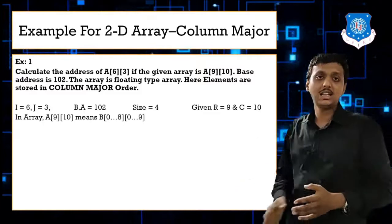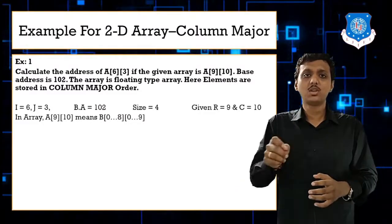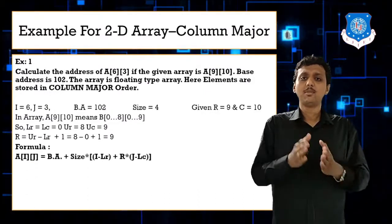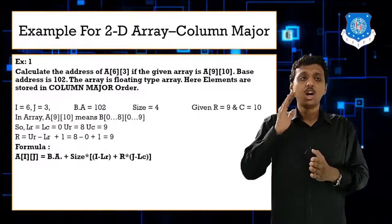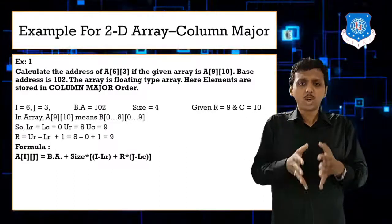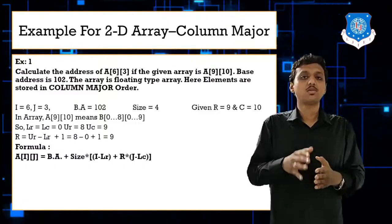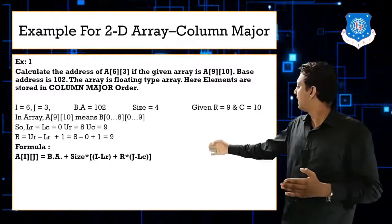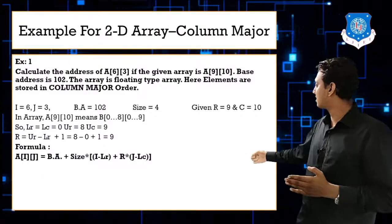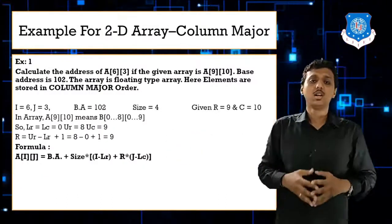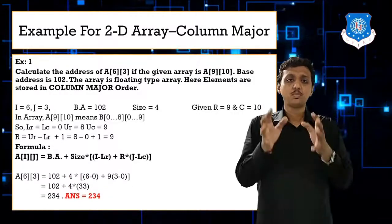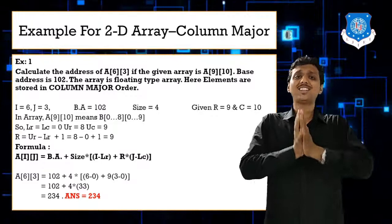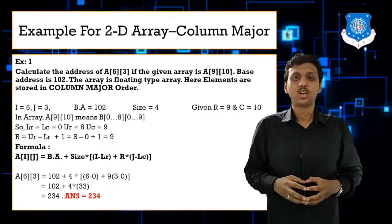Calculate R: R = UR - LR + 1 = 8 - 0 + 1 = 9. LR = 0, LC = 0. Apply the formula: A[i][j] = base address + size × ((i - LR) + R × (j - LC)) = 102 + 4 × ((6 - 0) + 9 × (3 - 0)). The answer is 234, which is the address of A[6][3].